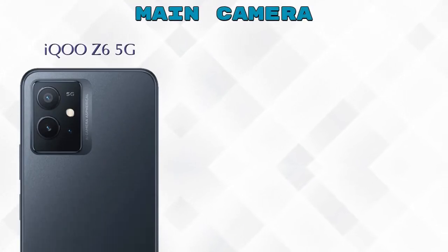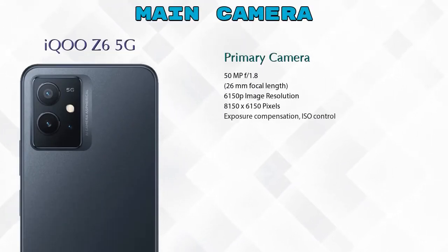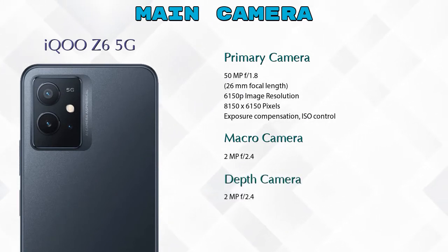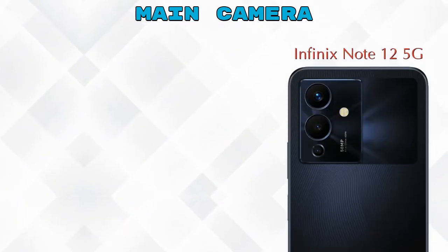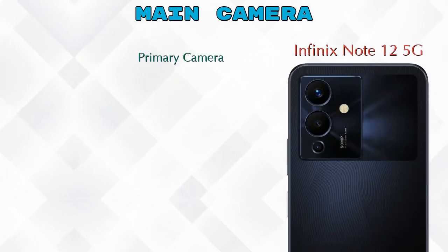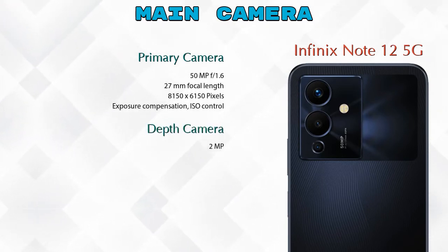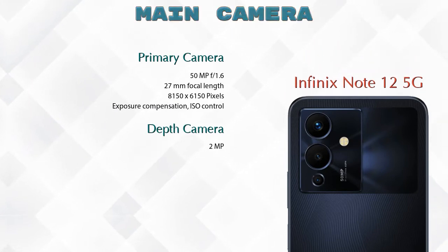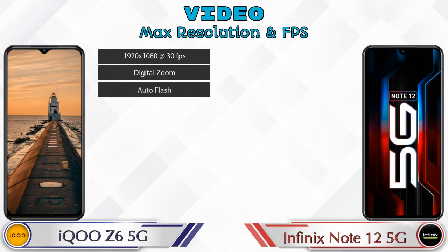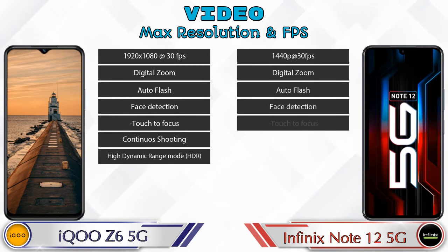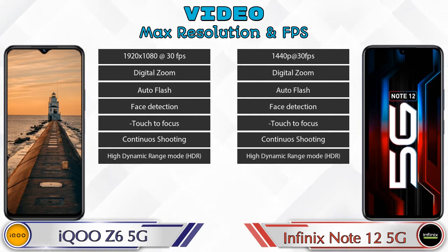Now let's talk about the camera. The iQOO Z6 5G has three rear cameras: a primary camera, macro camera, and depth camera. The Note 12 5G has two rear cameras: a primary camera and a depth camera. For video, both phones support seven different types of video features.